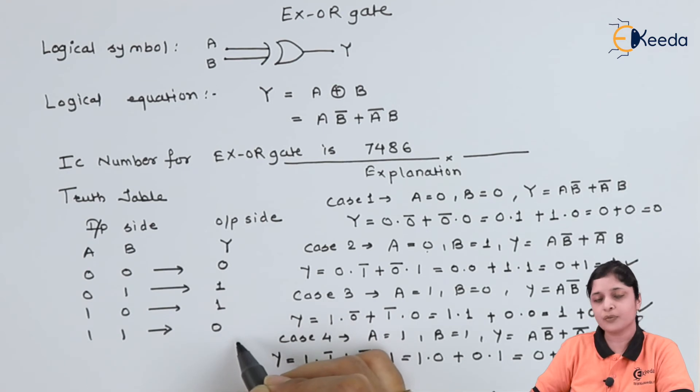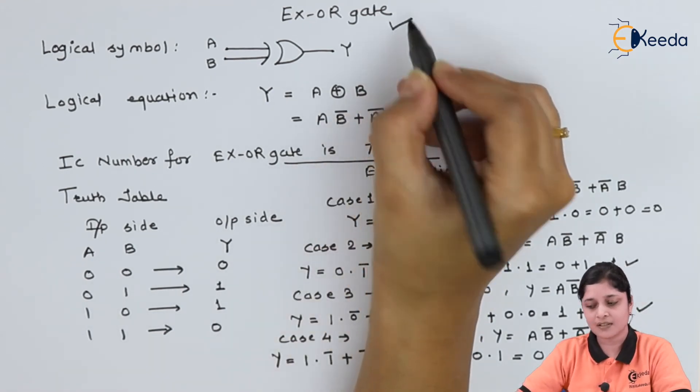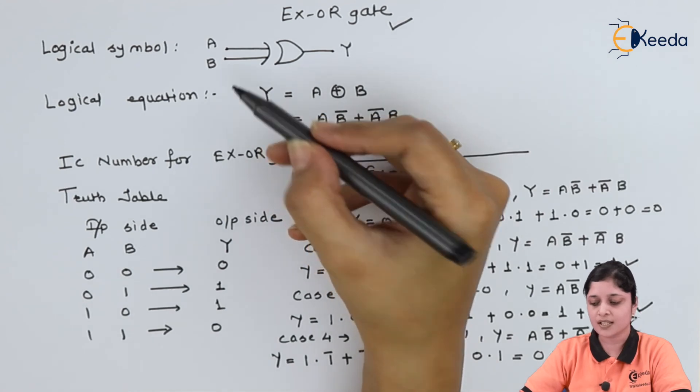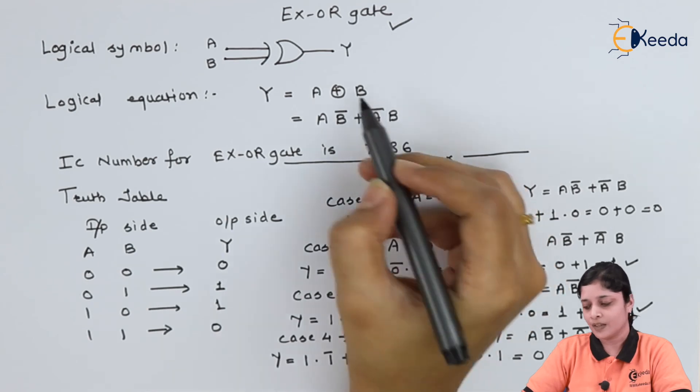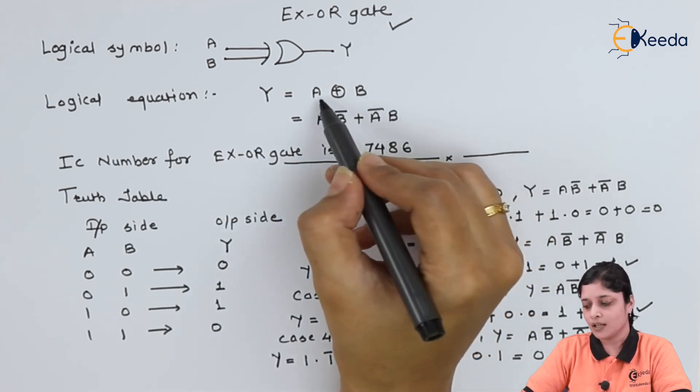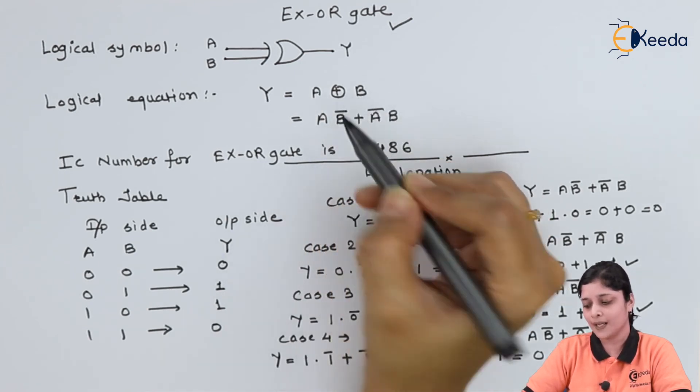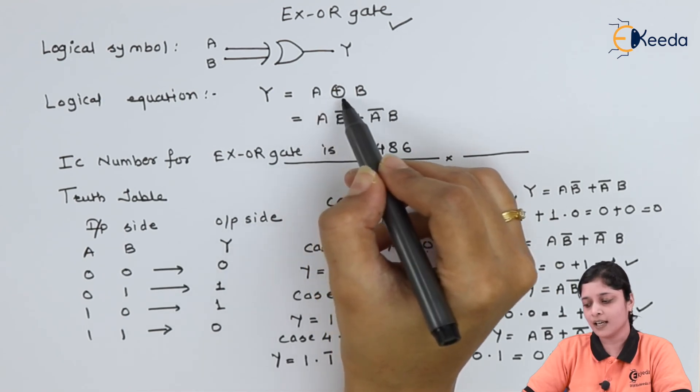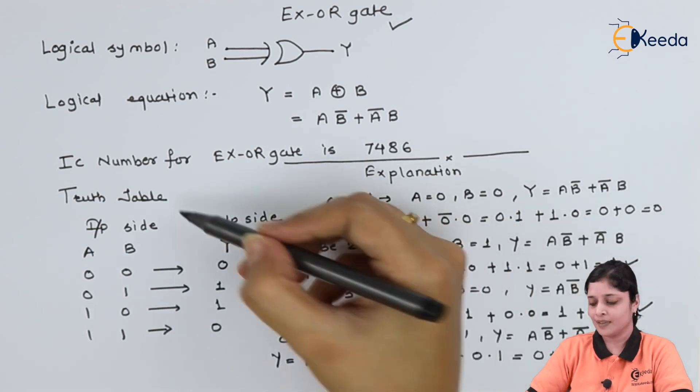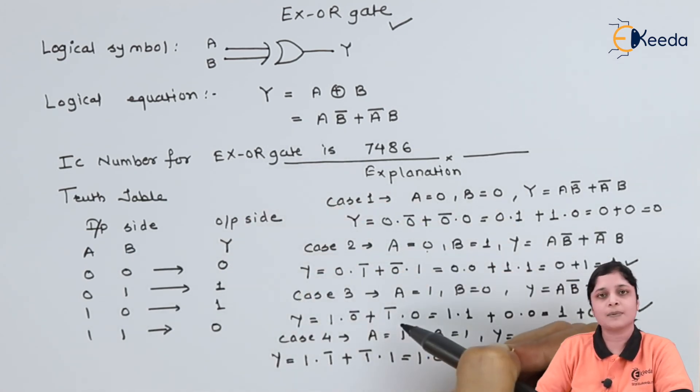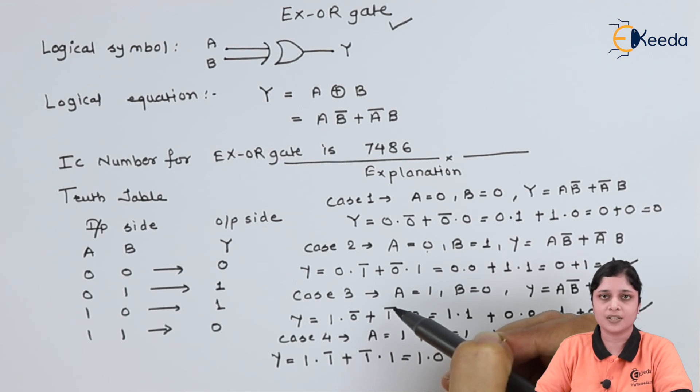In this way you have to form this truth table according to the input combinations and logical equations. These are the derived gates. In that we have discussed the XOR gate. Its logical symbol. Logical equation. It is a expanded form. It is a symbol. A XOR B. It is called as A XOR B. IC number is 7486. Truth table and explanation of truth table. How the answers you will get here.